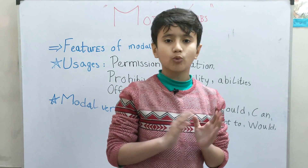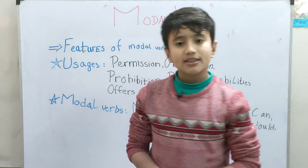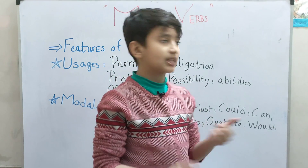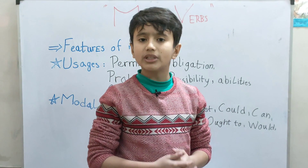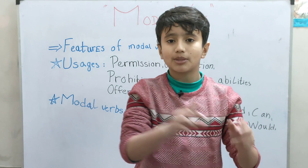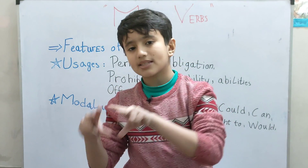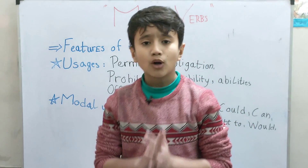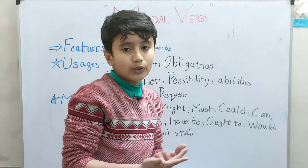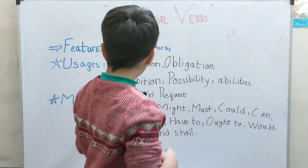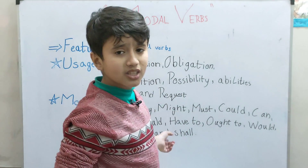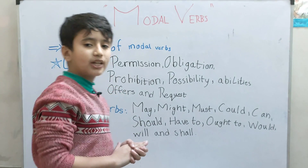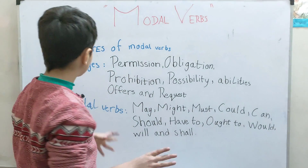Today's topic is modal verbs. First of all, what are modal verbs? Modal verbs are verbs that modify different kinds of words. For example, modal verbs include have, has, had, and multiple others like might, should, must, can, cannot, and many more. Some of them are positive, some are negative — like can is the positive and cannot is the negative. I am going to be explaining them briefly and shortly. We have a detailed version of all of these that you people will watch soon — this is my first playlist on modal verbs.